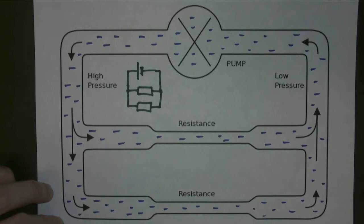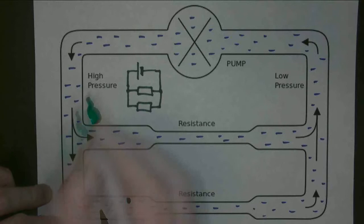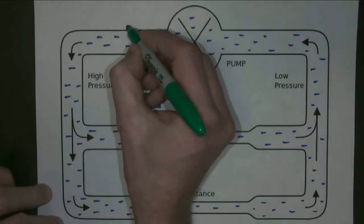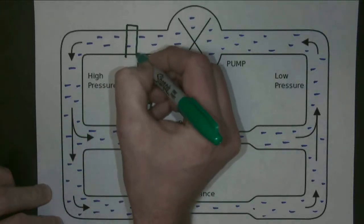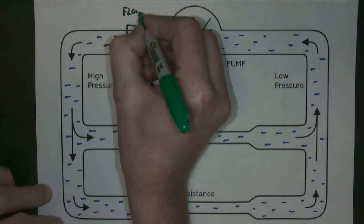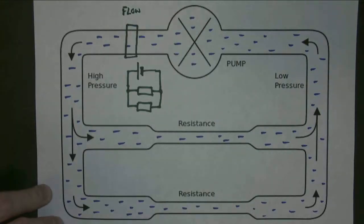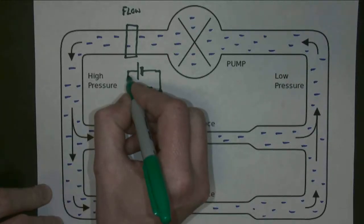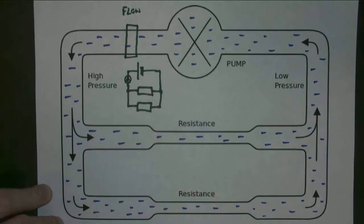If I wanted to measure the analogy of current, I'd be measuring flow rate. So I could put a flow meter in here. You actually have to put it physically in the pipe and let the water flow through it — in the same way that if I were to put an ammeter in my circuit, I would have to put it in there physically.